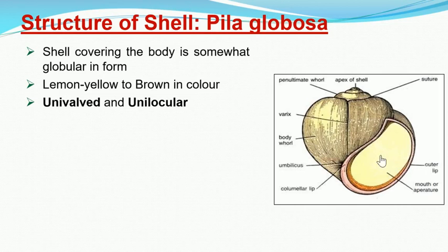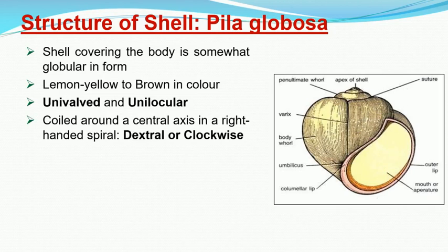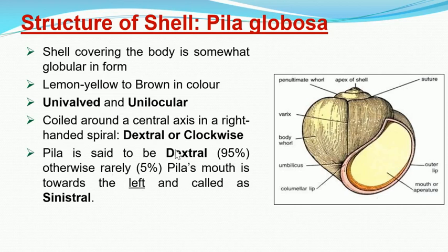Unilocular means undivided — inside there is no division, just one large space — and it forms a long hollow cone around a spiral central axis. The shell is coiled clockwise or anti-clockwise, but most of the time it is clockwise. A clockwise shell is called a dextral or right-handed shell. In Pila, 95% of shells are dextral, while only 5% are sinistral — that is, left-handed or anti-clockwise.